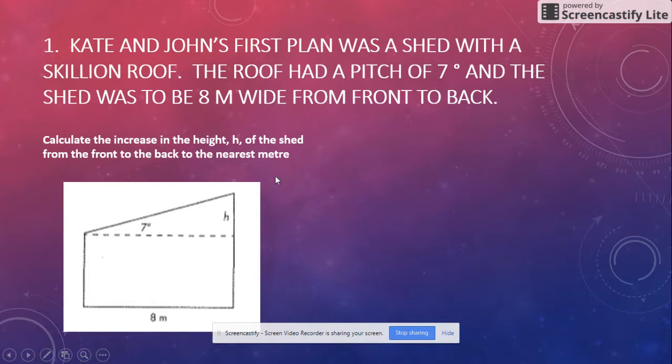The roof had a pitch of 7 degrees, and the shed was to be 8 meters wide from the front to the back. We're looking at the side of the shed. Calculate the increase in height h of the shed from the front up to the back to the nearest meter.